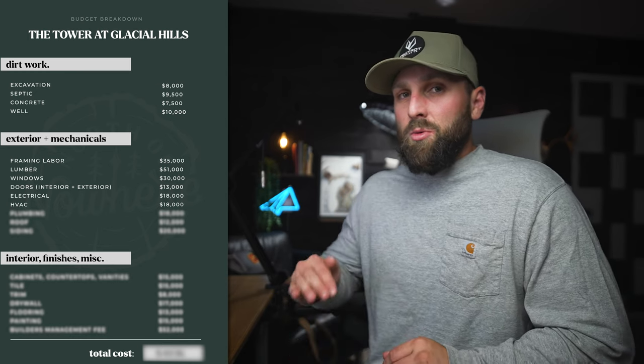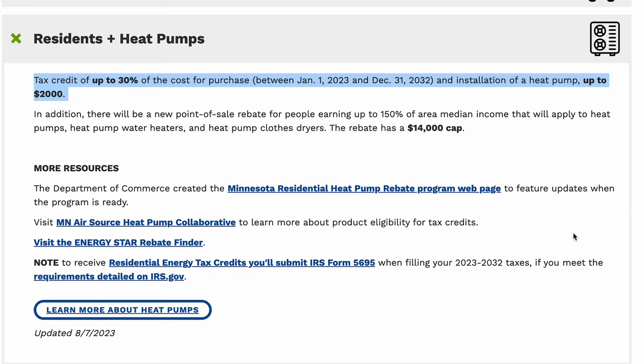HVAC is budgeted at around $18,000 as well. We considered a zoned system for the multi-level tower but that's much more expensive, so we're likely going to have one thermostat on the second level with Ecobee temperature sensors on the first and third levels to normalize the temperature. We're also doing a heat pump instead of a traditional AC unit — they're much more energy efficient and greener. Under the Inflation Reduction Act you can currently take a tax credit for a heat pump. We'll have a furnace too, but the heat pump supplements it so both work more efficiently together.